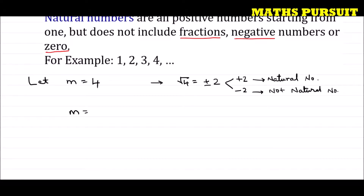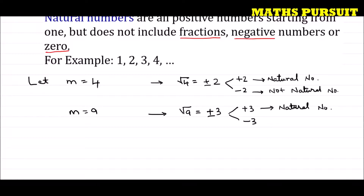Similarly, if we consider m equal to 9, then root 9 is equal to plus or minus 3. That means it could be plus 3 or minus 3, because 3 times 3 is 9 and minus 3 times minus 3 is also 9. Plus 3 is a natural number, but minus 3 is not a natural number, because natural numbers are not negative numbers, zero, or fractions.